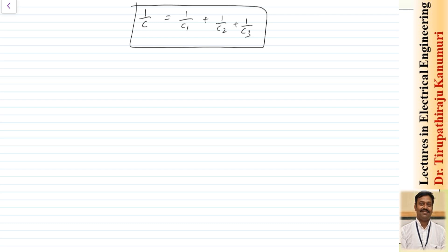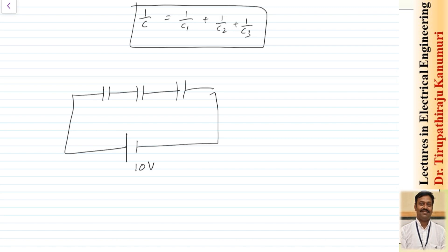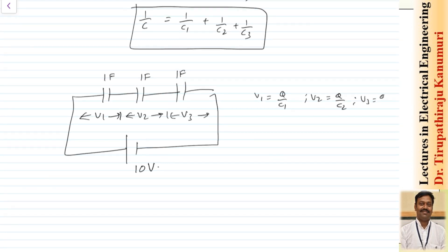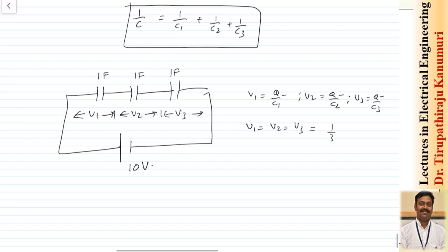To understand this clearly, let us take one example with three capacitors connected in series. The voltage applied is 10 volts, and the value of each capacitance is 1 farad — practically units will be in microfarad, but I am taking 1 farad to make calculation easy. The voltage drops across each are V1, V2, and V3. In series combination, Q is the same; here the capacitances are also the same, so V1 equals V2 equals V3, and each equals one-third of the total voltage.